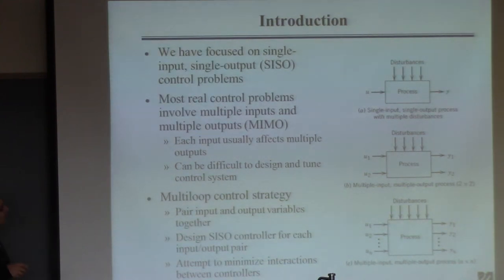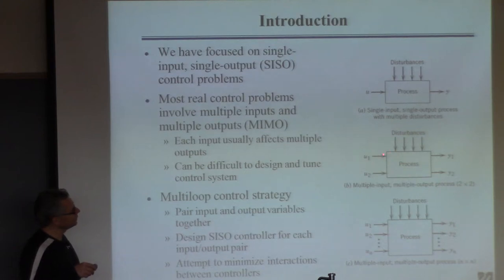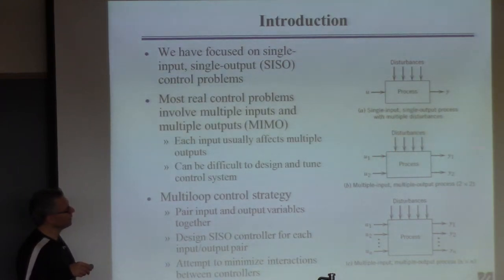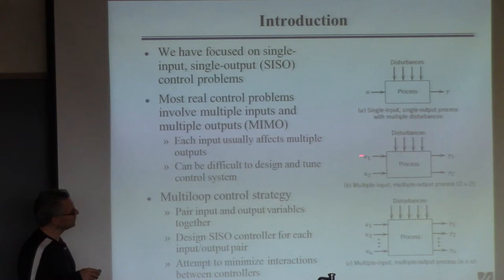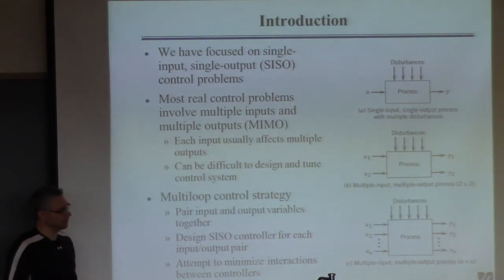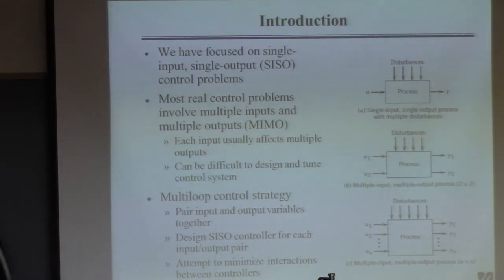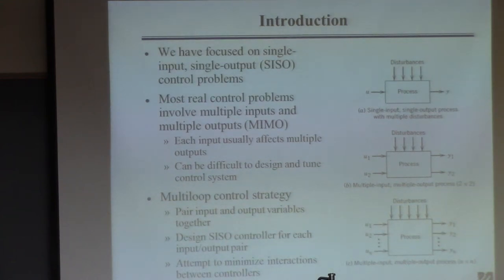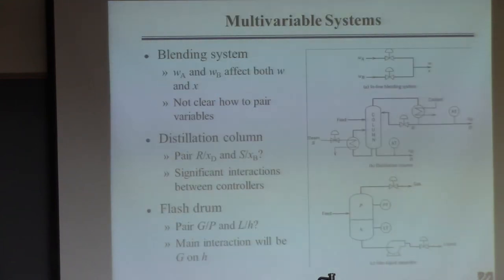This is a divide-and-conquer strategy: pair the variables together and do exactly what you did before, just more times. In a 2x2 case you do it twice; for an n×n system you do it n times. We'll focus a lot on the 2x2 case because it's simpler, but the same principles apply to bigger systems.